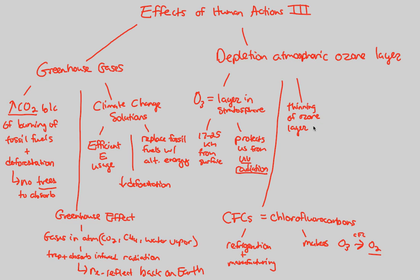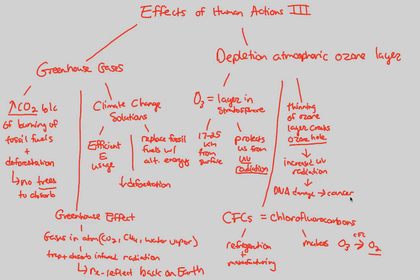This thinning of the ozone layer creates what we call an ozone hole — something a lot of people have heard of before. If you have a hole in the ozone layer, this represents a spot of increased UV radiation, a place where we cannot be protected. This is the idea behind wearing sunscreen to protect us from UV radiation. If we have increased UV radiation, we get very detrimental effects — very direct DNA damage. This often leads to serious melanomas and skin cancers, and crops are also very directly affected.